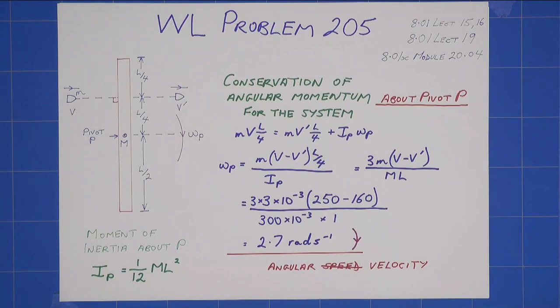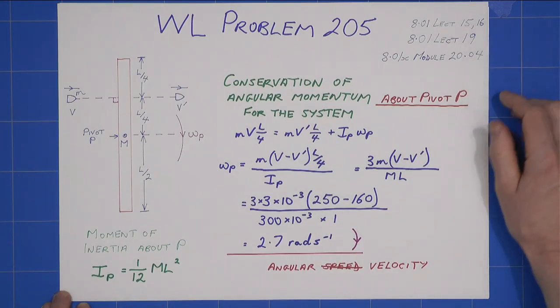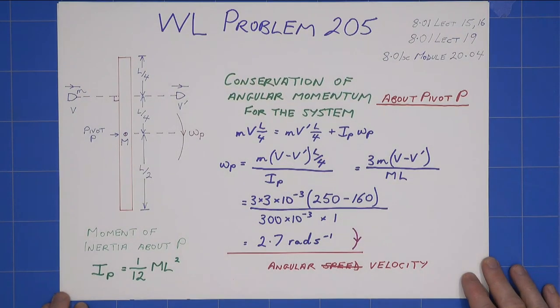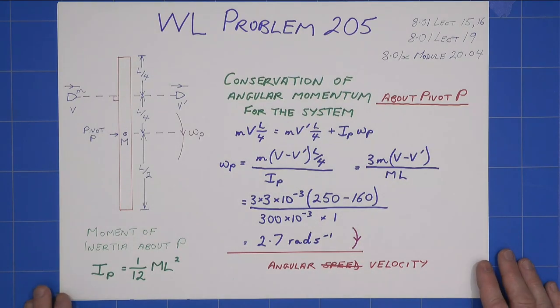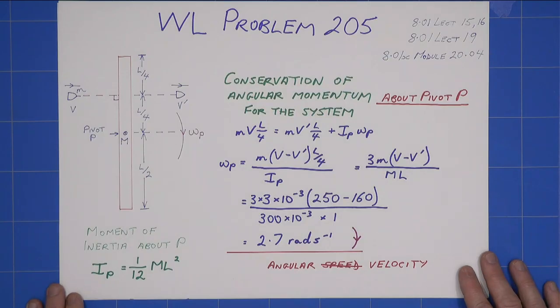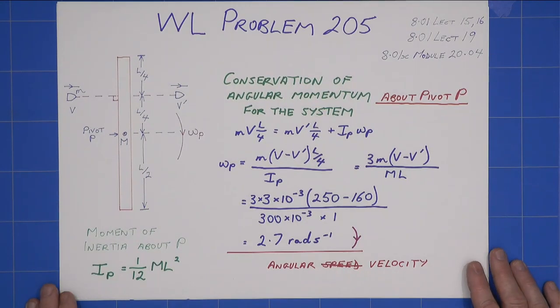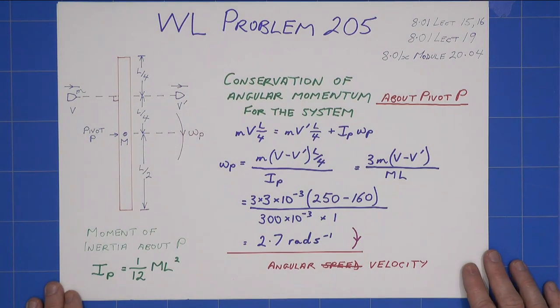This is Keith's solution to Walter Lewin's problem 205. And the relevant lectures from 801 are 15, 16, 19 and also module 20.04. Some good stuff in there, even if you think you know it. I always like to go over how Walter does things because I often find he has a different approach, even on simple problems.